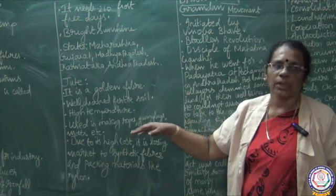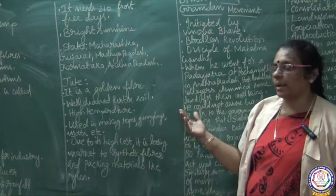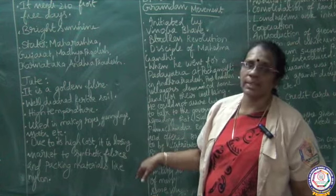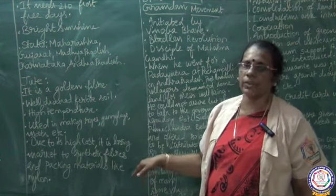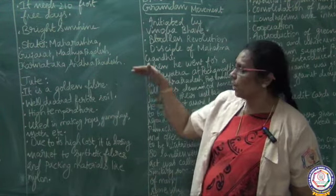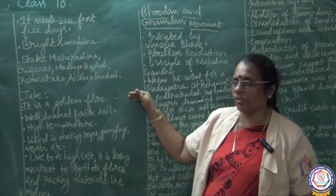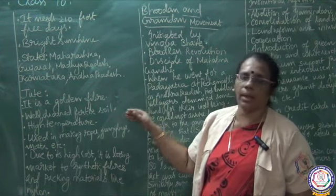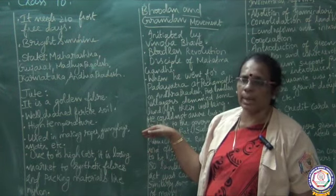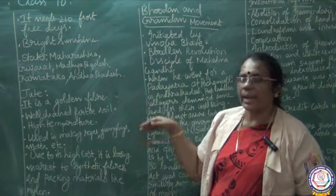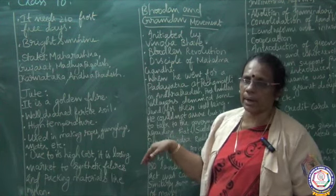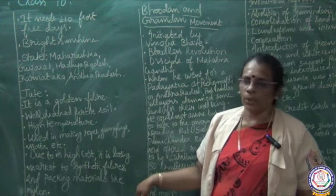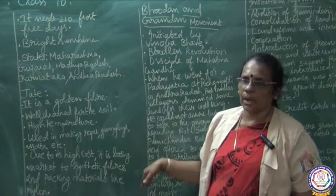Because of its high cost, jute faces great competition in the market. Jute has been replaced by artificial synthetic fibers like nylon, which are used in industries because of their lower cost. Because of the introduction of synthetic products, jute has lost its popularity in the market.